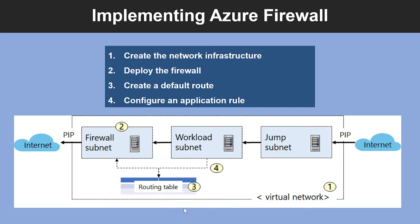The private IP address will be used in a new routing table. The third step is to create a default route — create a routing table to direct network workload traffic to the firewall, and the route will be associated with the workload subnet so all traffic from the subnet will be routed to the firewall's private IP address. The last step is to configure an application rule.